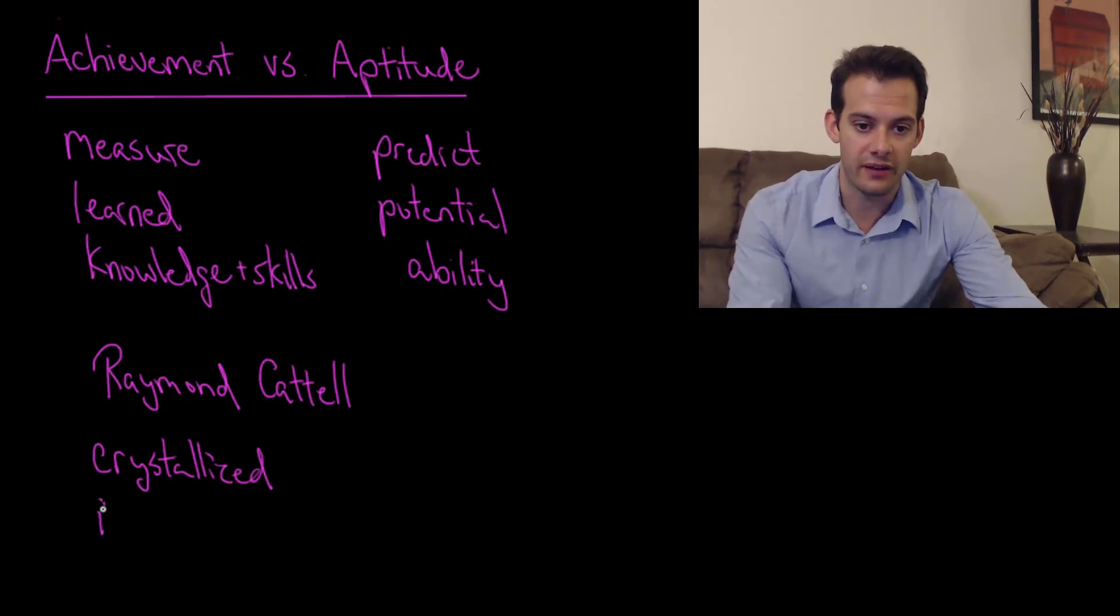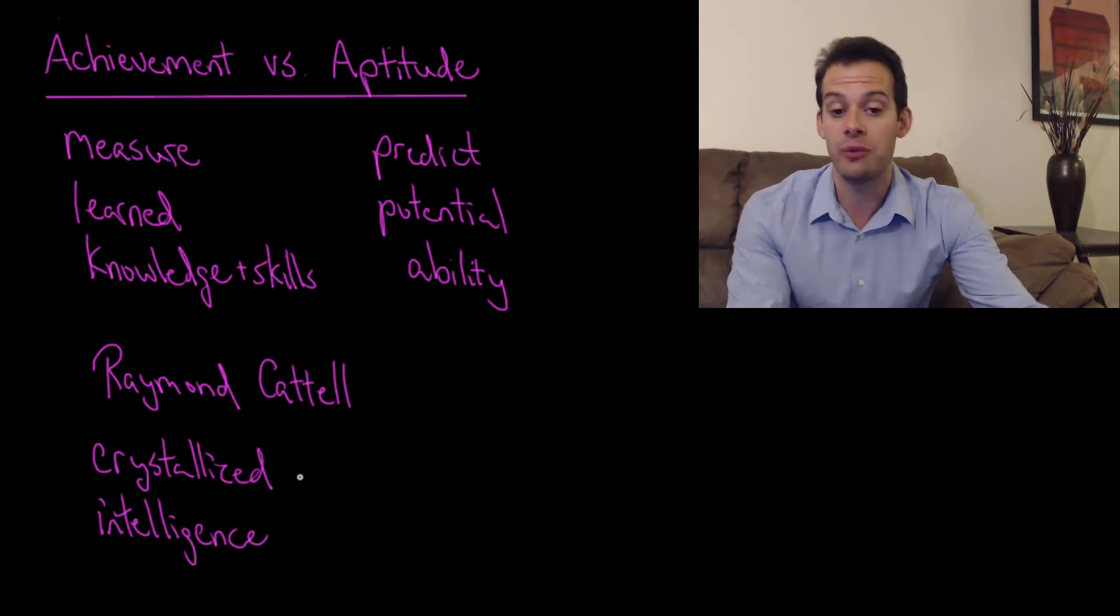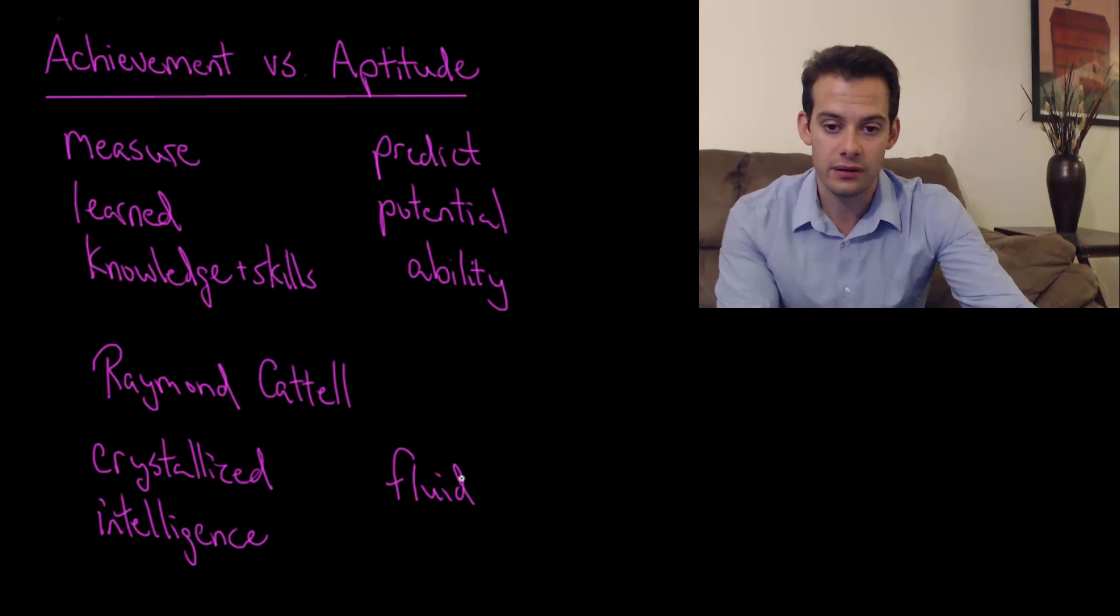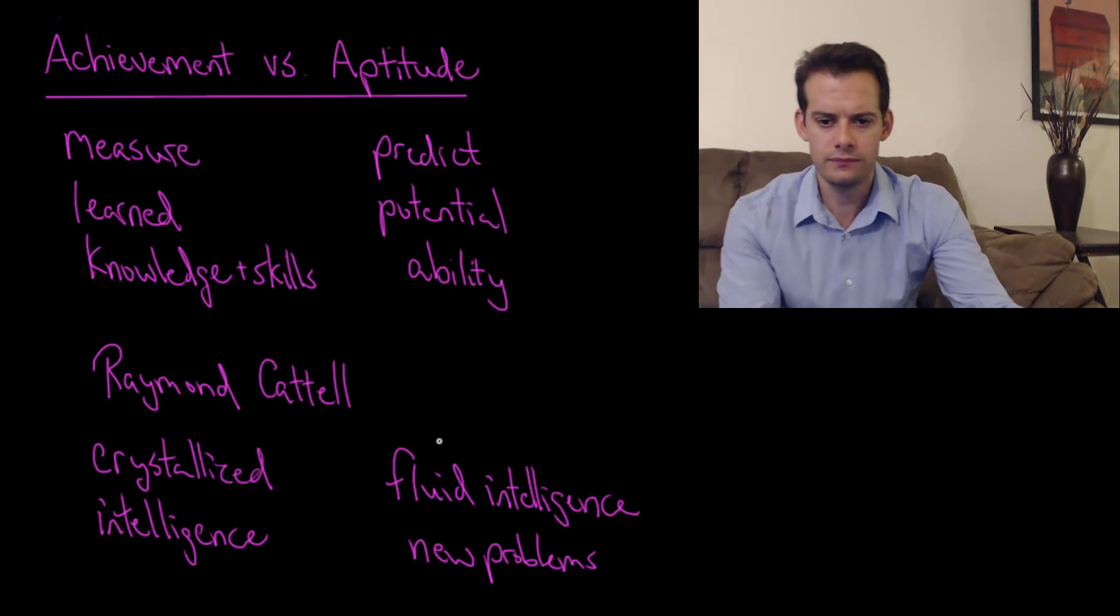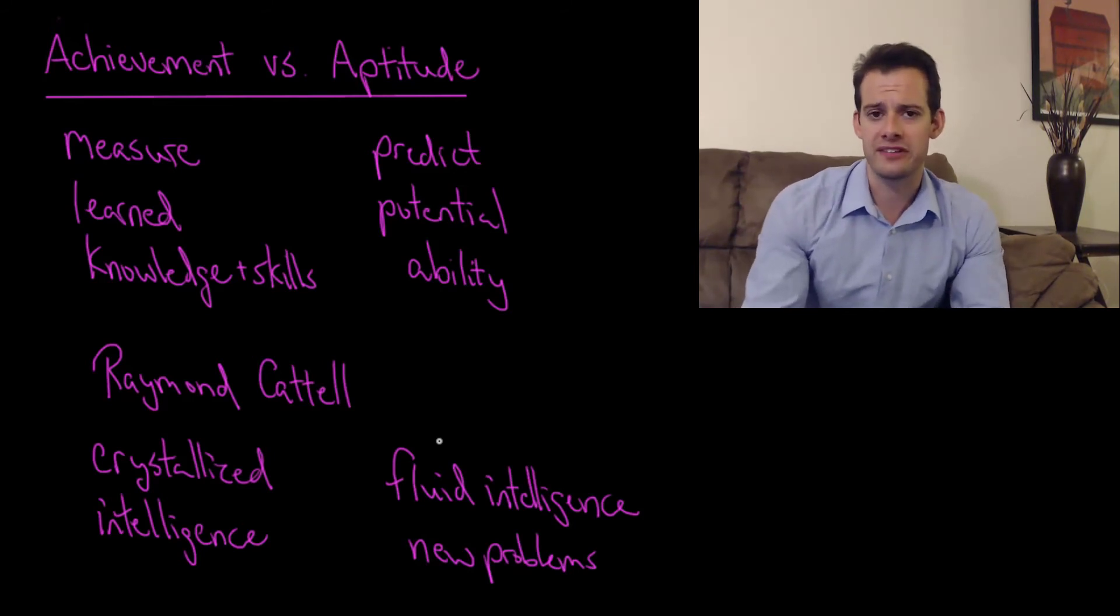So crystallized intelligence would be like the achievement side where it's knowledge that's been accumulated through experience. And fluid intelligence would be your ability to solve new problems that you haven't solved before. So one way to think about this is to imagine playing video games. And maybe I'm speaking from some personal experience here, but let's imagine that you've spent maybe too much time playing a game like Call of Duty.